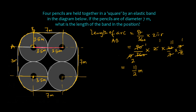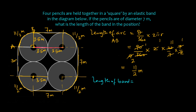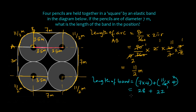Each of the four arcs is 11/2, and there are four straight sections each of length 7. So the total length of the band is: (11/2 × 4) + (7 × 4) = 22 + 28 = 50 centimeters. The length of the band is 50 centimeters.